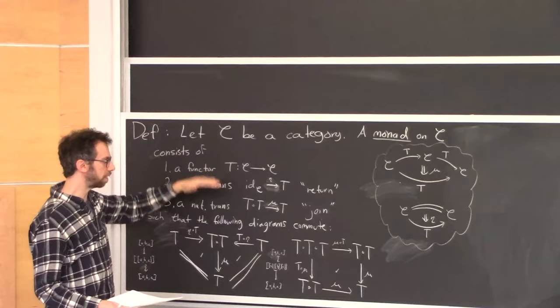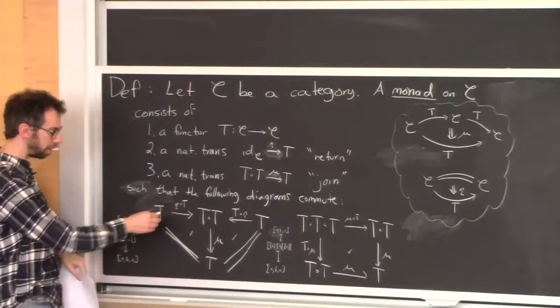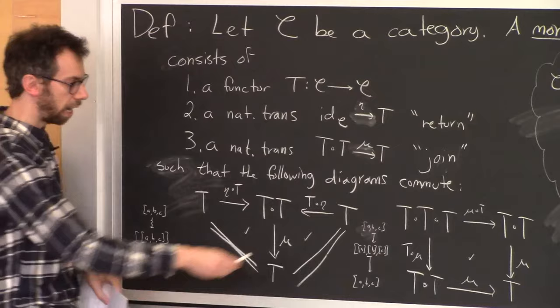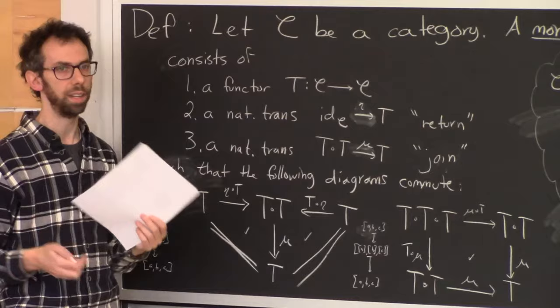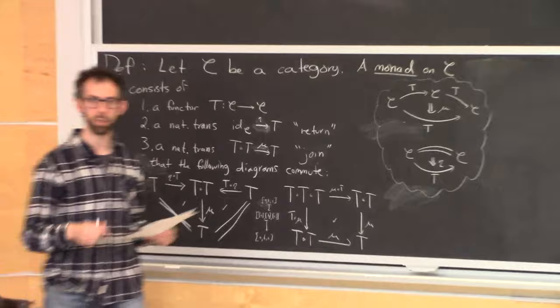We have these three structures and two laws: a unitality law (or two unitality laws) and an associativity law. For example, if you had the list A, B, C and turned it into the singleton list A, B, C and then flattened it, you get back A, B, C. And if you take a list of lists of lists and flatten by removing either the outer or inner brackets, it doesn't matter — you get the same result when you double flatten.